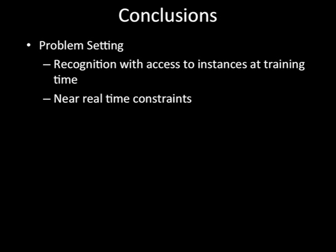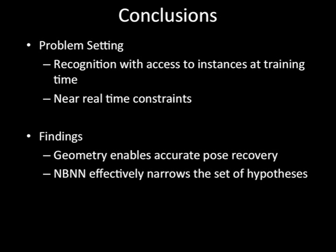So, we've looked at a system that does accurate pose recovery. We've looked at a problem where we're trying to do recognition with access to the instances at training time under near real-time constraints. What we found was that the geometry of the problem allows us to enable really accurate pose recovery. And the Naive Bayes nearest neighbor algorithm effectively narrows a set of hypotheses to be passed to the geometric verification. Cool. That's it. Do you have any questions?